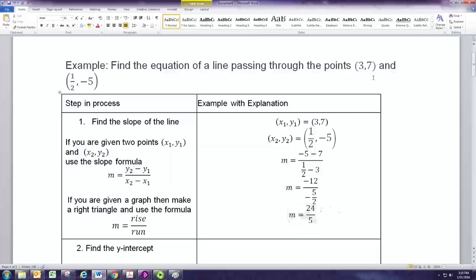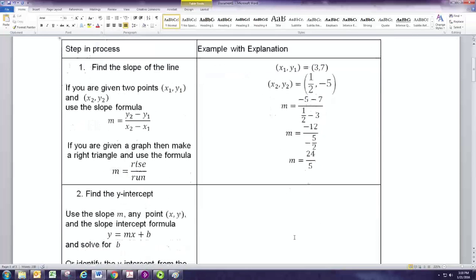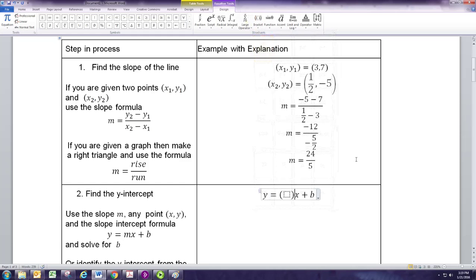The next step is to get the y-intercept. Now you could be lucky and be given that as one of the points, but here we are not. So what we're going to do is use the slope that we have and one of the points that we have, and we're going to substitute into this formula. So we can replace the slope with this number, 24 over 5. And we can replace x and y with the coordinates of one of the points. Let's use the x1, y1, 3, 7.